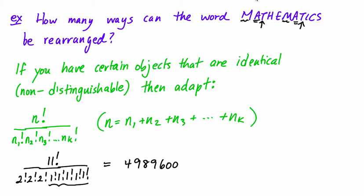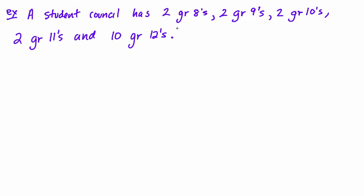Okay, we'll take a look at one more example. And this is an example of a student council. So a student council has 2 grade 8s, 2 grade 9s, 2 10s, 2 11s, and then most of it 10 grade 12s. And how many ways can these students be rearranged?